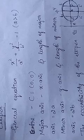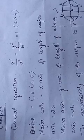The length of the semi-major axis is a and the length of the semi-minor axis is b. The eccentricity of the ellipse is given by e² = 1 − b² / a². S and S' are the foci, having coordinates (ae, 0) and (−ae, 0).